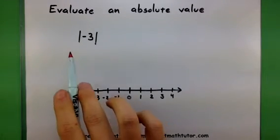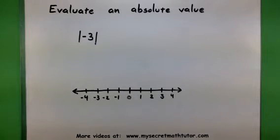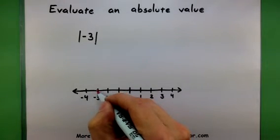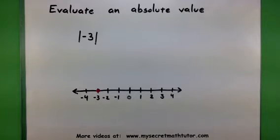So if we're going to do the absolute value of negative 3, I could imagine where negative 3 is on the number line. There we are.